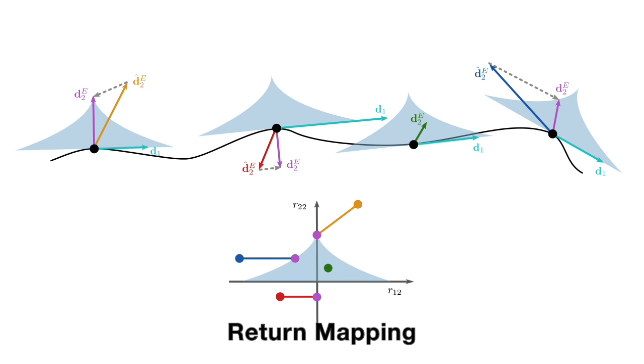The return mapping shows how the incrementally evolved d2e hat is projected to the blue region, the compression and shearing allowed by friction. Vectors in extension are projected to the normal, while those under compression are projected tangentially.